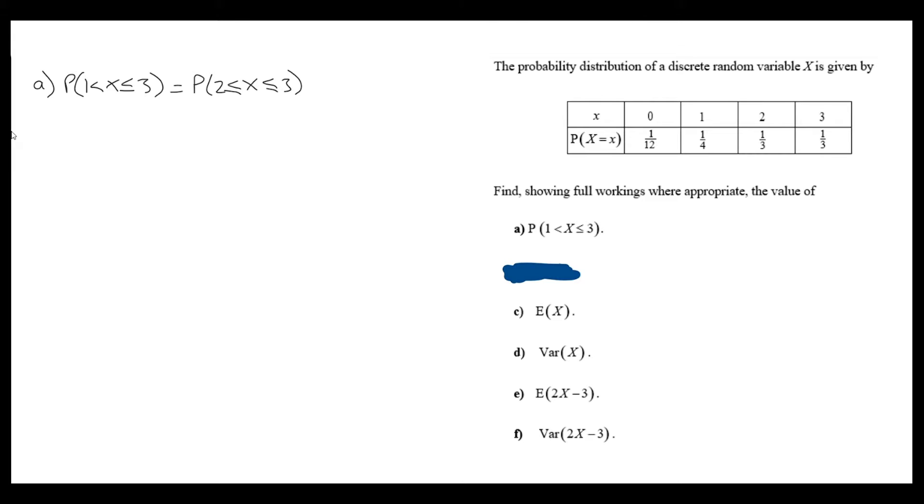Looking over at the table, the probabilities to include are the probability that x equals 2 and the probability that x equals 3. Both of them are a third, so I have one third plus a third equals two thirds.